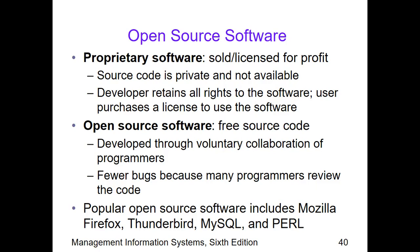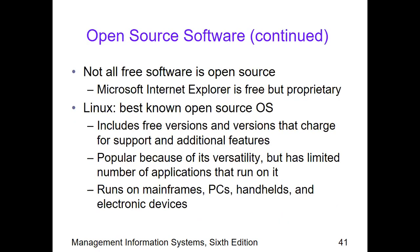Open source software is a free source code developed through voluntary collaboration of programmers, and we can install and use these apps for free. There are fewer bugs because many programmers review the code, and any problems can be posted on an open forum such as Google Play, where developers and programmers can review and improve their created software accordingly. Popular open source software includes Mozilla Firefox, Thunderbird, MySQL, and Curl. Note that not all free software is open source.